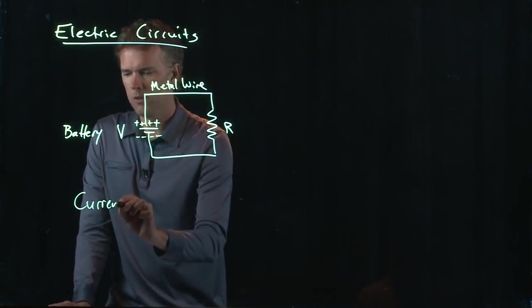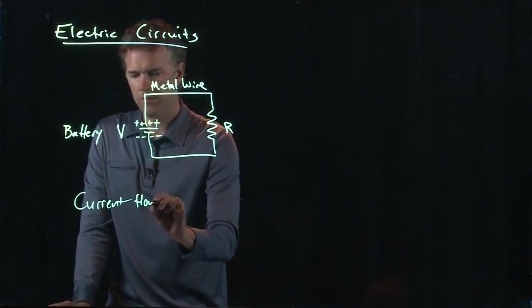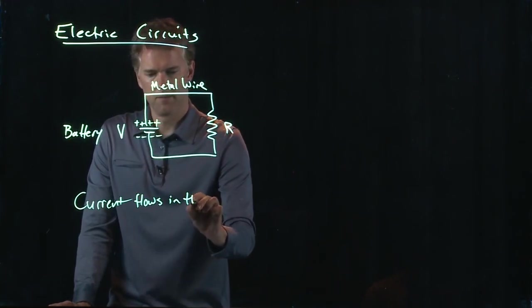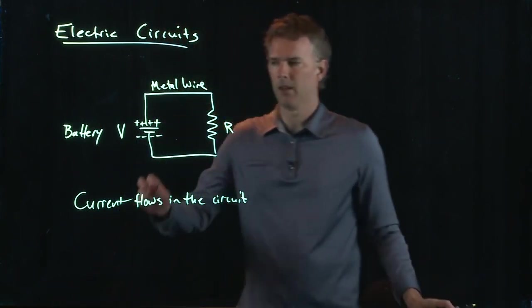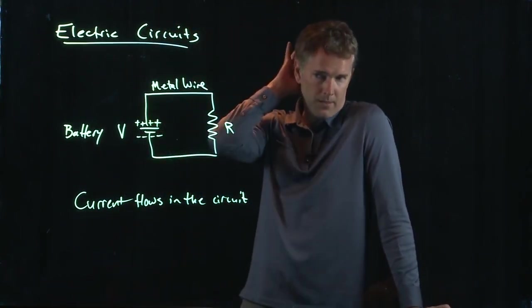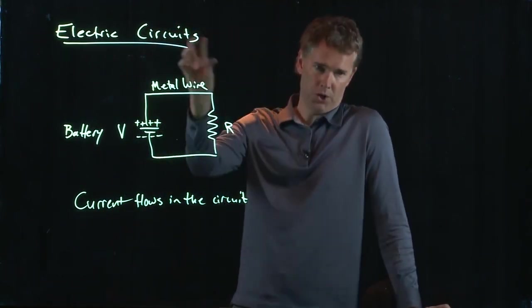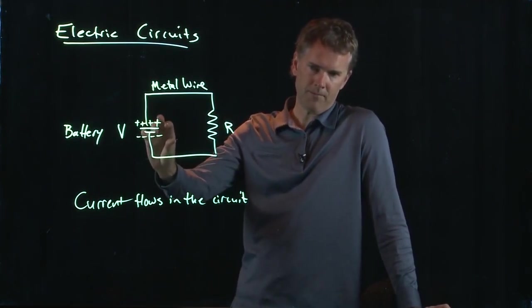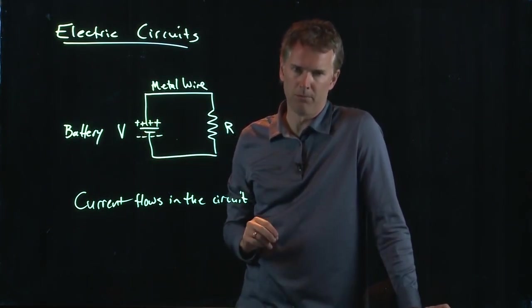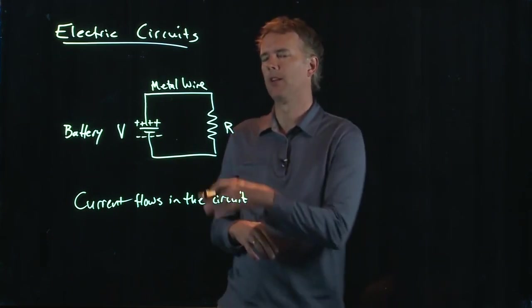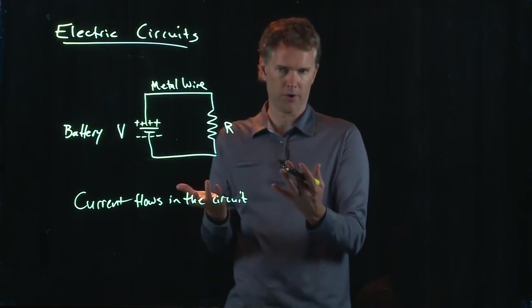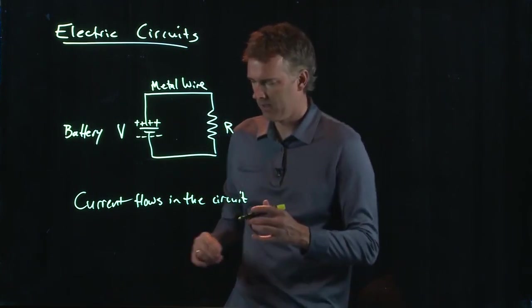Current flows in this circuit. Now, you might think that all these positive charges on the top of the battery would push positive charges around. But that's not what actually moves. What actually moves in a metal is electrons. And so we'll talk about the sign of current in a second.